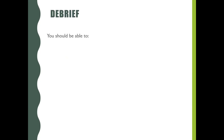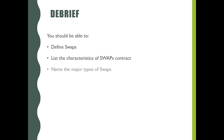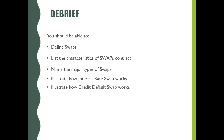We have come to the end of this module. Now you should be able to define swaps, list the characteristics of swaps contract, name the major types of swaps, illustrate how interest rate swap works, illustrate how credit default swap works, and illustrate how total return swap works.